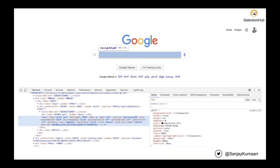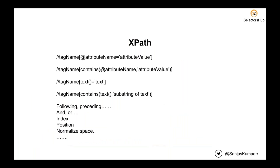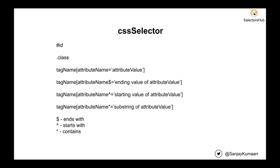When we write XPath and selectors, generally on google.com, if we have to write an XPath for an element, we right-click, inspect, the DOM opens, and we start typing. To get the XPath for an element, there are lots of methods — the standard formula is double forward slash, tag name, at-the-rate, attribute name equals attribute value. There are lots of other formulas too — for one element you can write n number of types of XPath. Similarly, there are a lot of functions in CSS selectors as well.